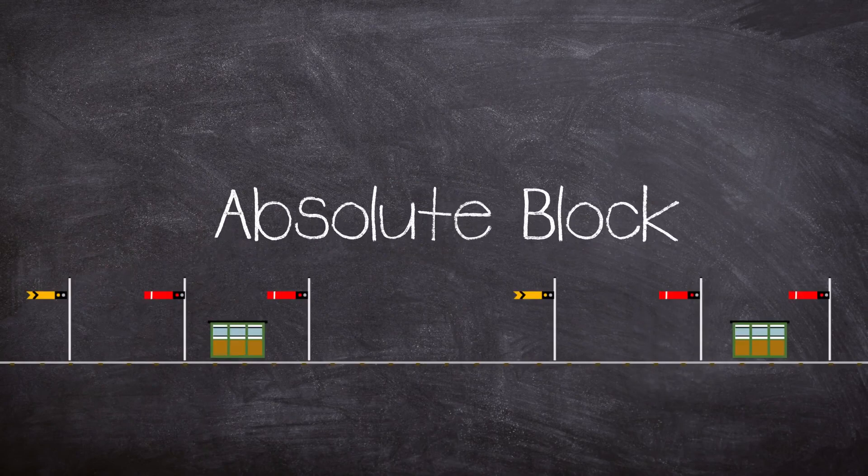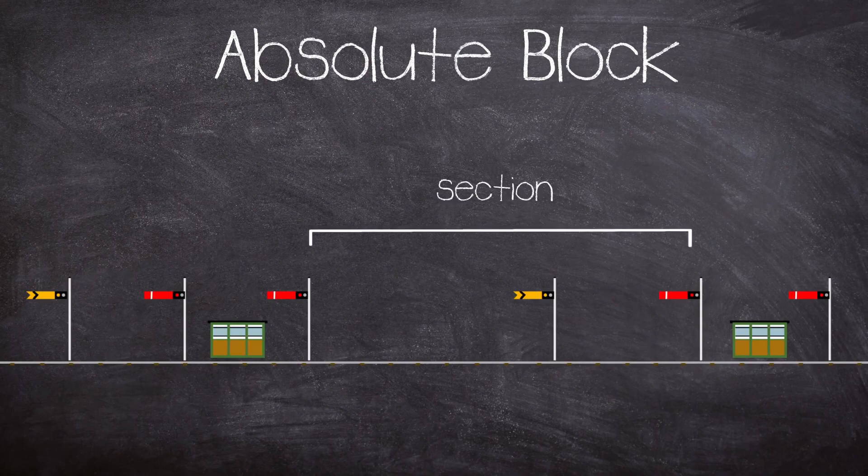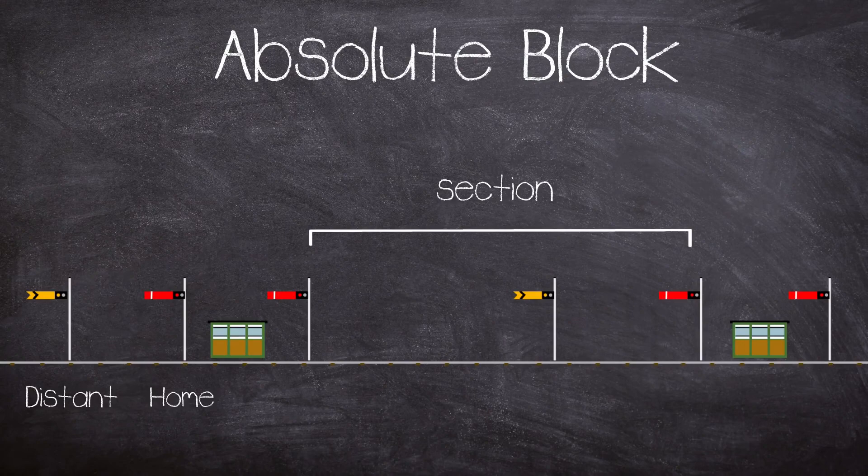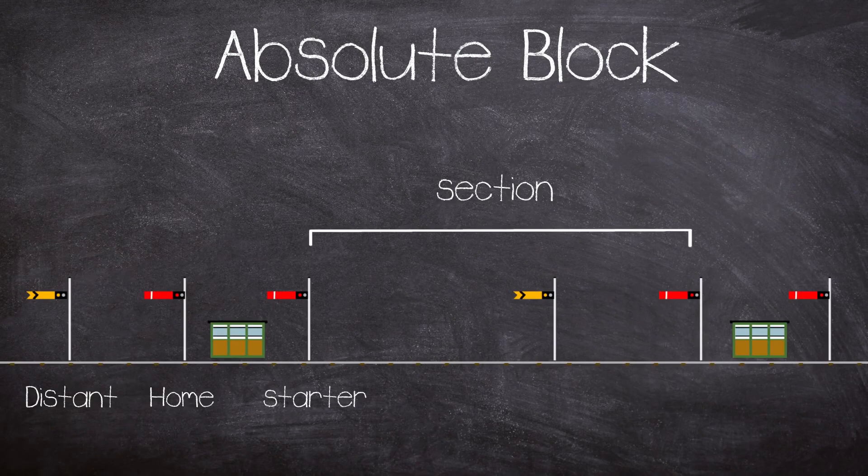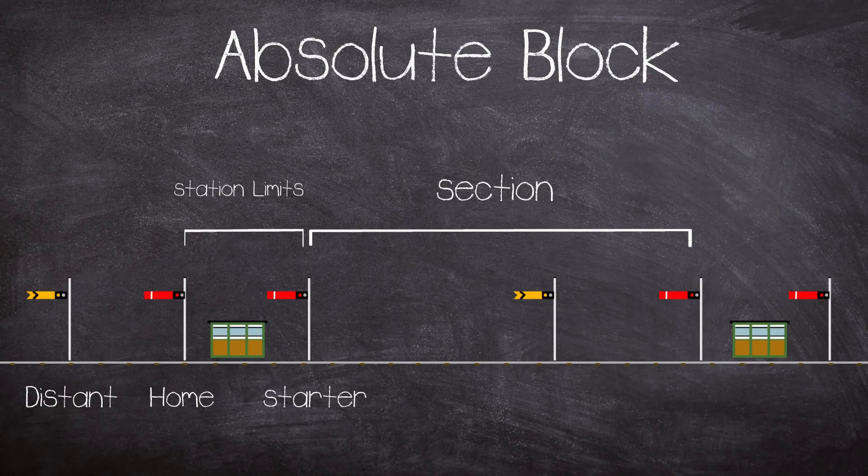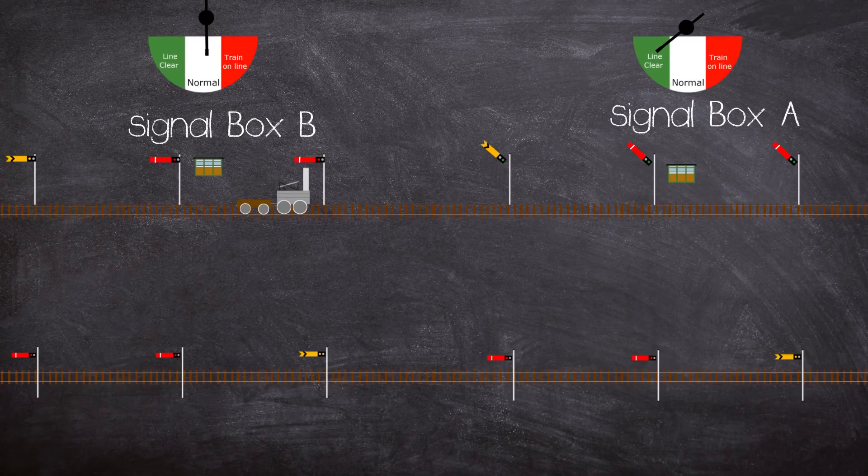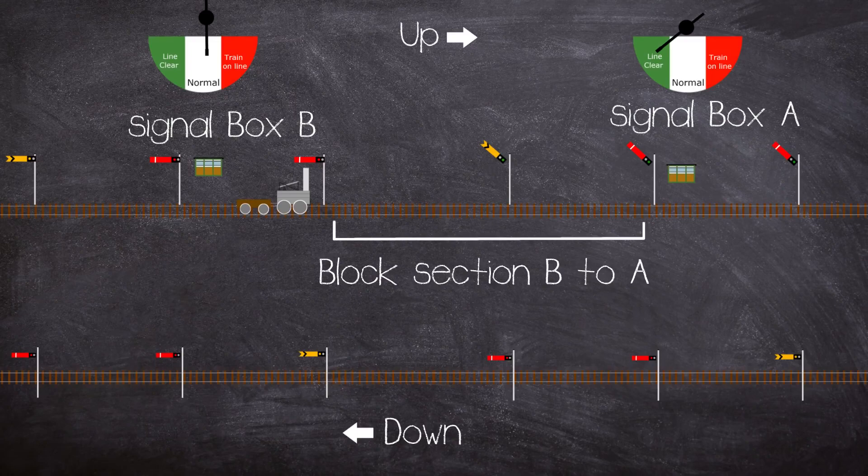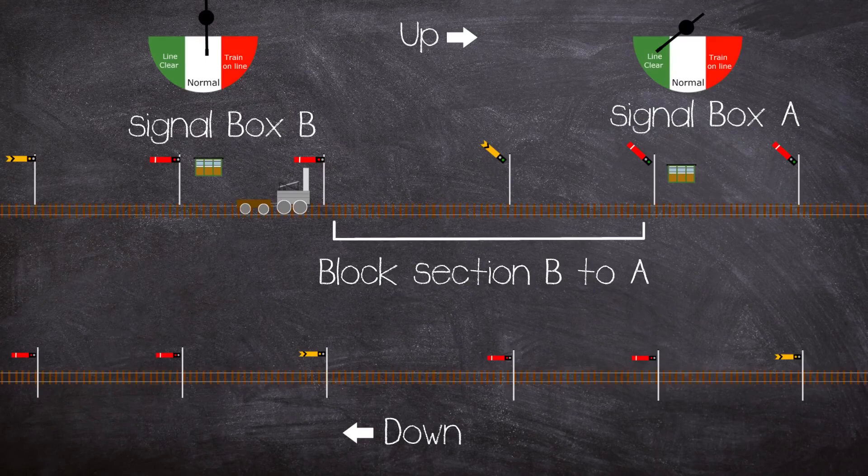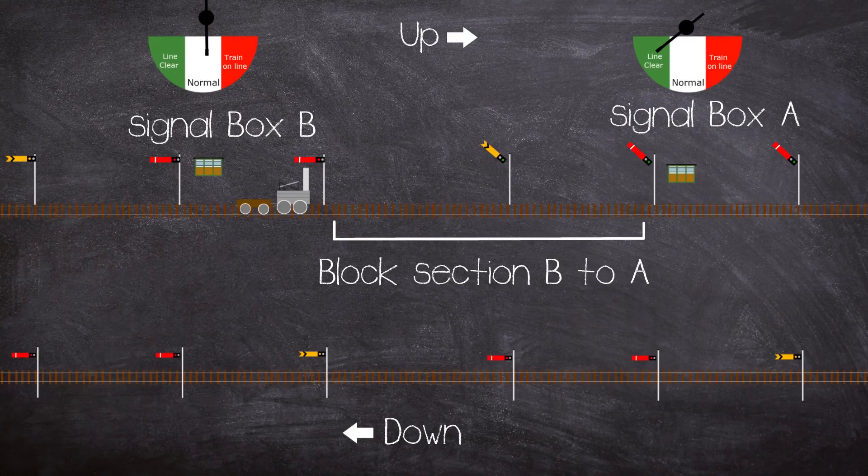Let's look at how the basic operation of absolute block signalling works. A line is split up into block sections and each section is under the control of its own signal box. Each signal box will have at least one distant, one home, and a starting signal. The section of the line between the outermost home and outermost starter is called station limits, and the signaller can move trains within this area without having to see if the section to the rear or advance is clear. Let's draw here two signal boxes and two running lines for an up and down line. If the train is to travel on the up towards signal box A from signal box B, the signaller in B must contact signal box A. This is done via a bell code. If the block for box A is clear, then they will set an indication on a machine called a block instrument to tell the signaller in box B that the line is clear.